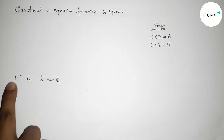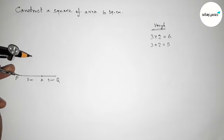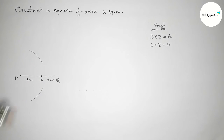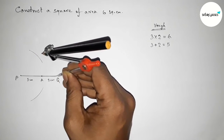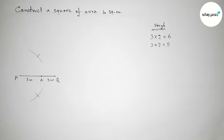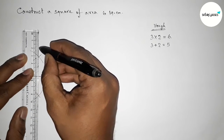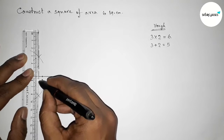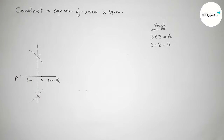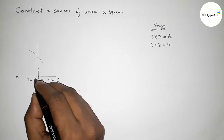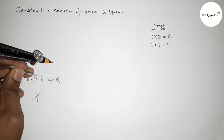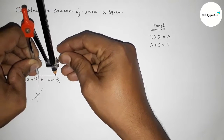Now we have to bisect the line PQ. Putting the compass on P and taking greater than half of PQ, drawing an arc. Then putting the compass on Q with the same length and cutting here. Joining the line which bisects PQ at a point — taking that point as O. Both lengths OP and OQ must be equal.